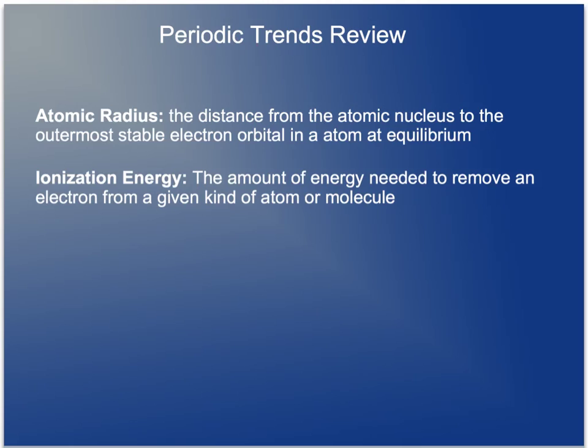Two things we're going to be talking about in terms of periodic trends are atomic radius and ionization energy. The atomic radius is the distance from the atomic nucleus to the outermost stable electron orbital in an atom in equilibrium. For simplicity's sake, we're going to say it is the size of an atom, the space between the protons in the center and the electrons in the outermost energy shell. The ionization energy is the amount of energy we need to remove an electron from a given kind of atom or molecule.